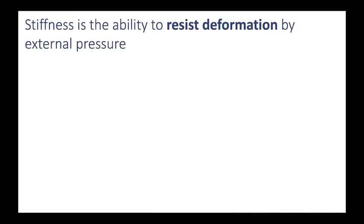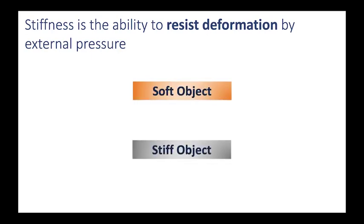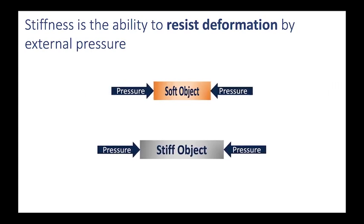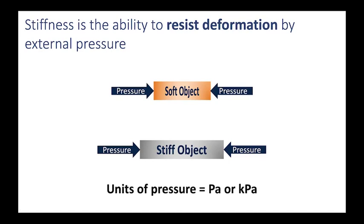Stiffness is the ability to resist deformation by an external pressure. Imagine we have a soft object and a stiff object and we apply the same exact pressure to both objects. The soft object would deform more than the stiff object because it has less ability to resist deformation. Notice that the resistance is to pressure, and therefore stiffness is in units of pressure — pascals, or more commonly in medical applications, kilopascals.